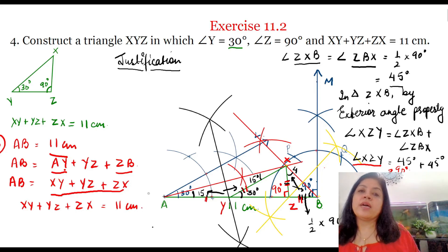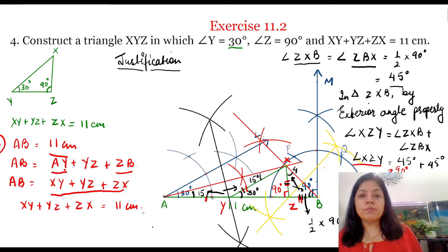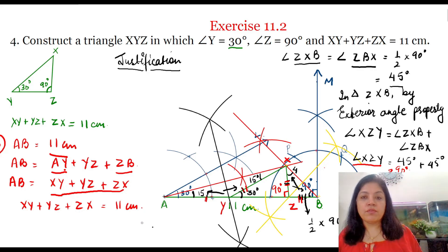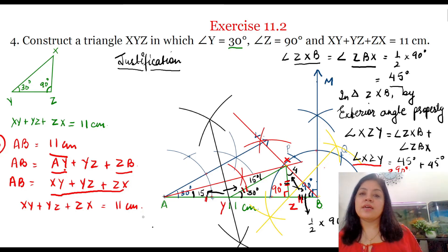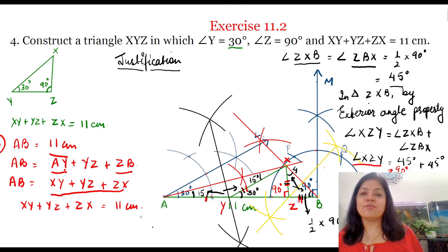Hence, triangle XYZ is the required triangle. I hope this construction is clear to you, and if you have any doubt you can ask me in the comment section below. It will be my pleasure to help you out with your doubts. Thank you.